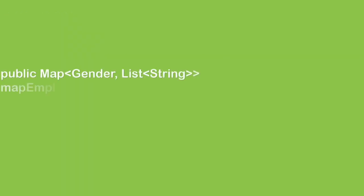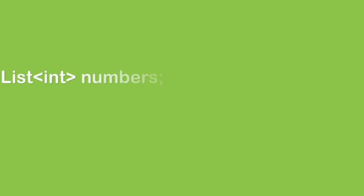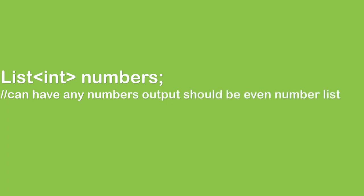The next question used the same Employee class but asked me to convert the list into a map where the key is gender (male or female) and the value is the list of employees of that gender. I gave the solution in the normal way. Then he gave a list of integers and asked me to iterate using Java 8 and a normal for loop to return only the even numbers — a very basic question, but I answered it.